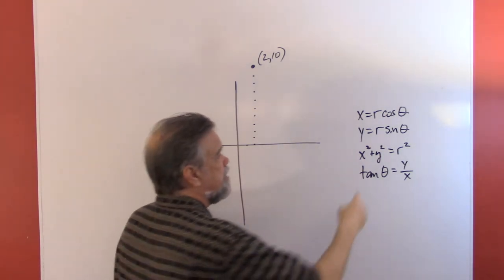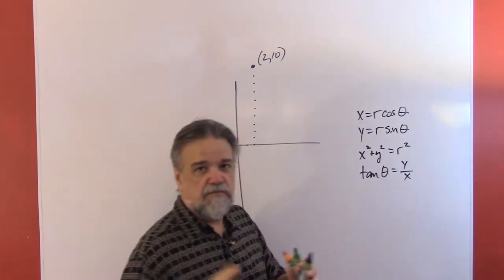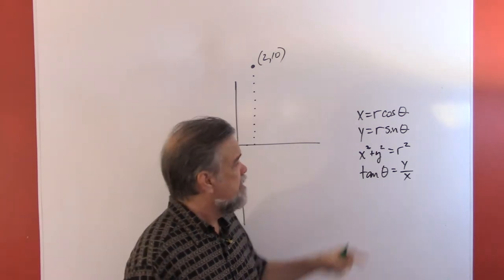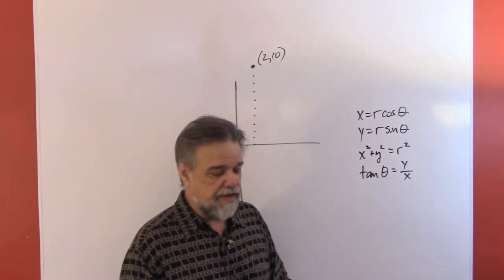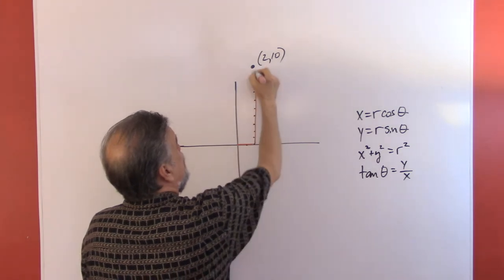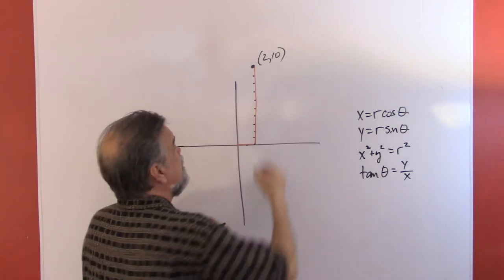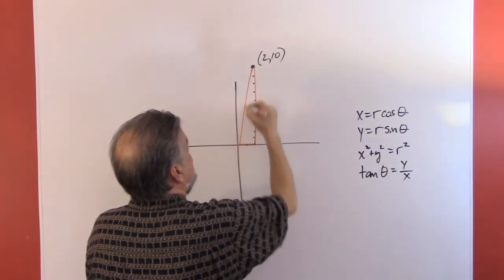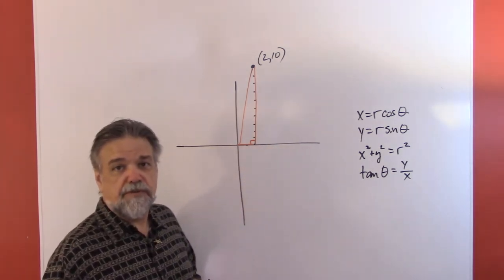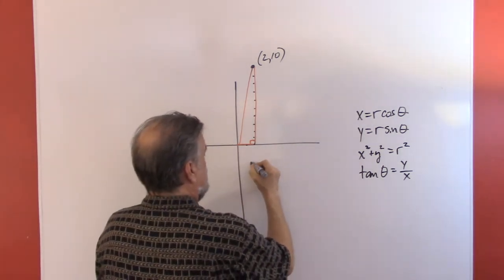If I know r and theta, I can say r times cosine of theta gives me x, and r times sine of theta gives me y — really fast and easy. The other relationship between x, y, and r is that x squared plus y squared equals r squared. That's because no matter where your point is, you can draw a right triangle where one leg is x, the other leg is y, and the hypotenuse is r. So x squared plus y squared equals r squared.